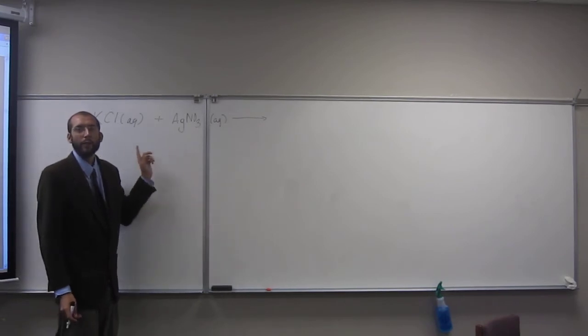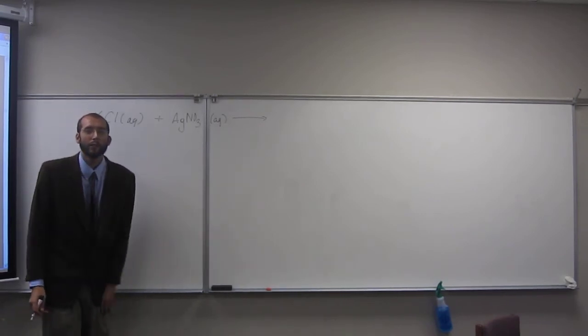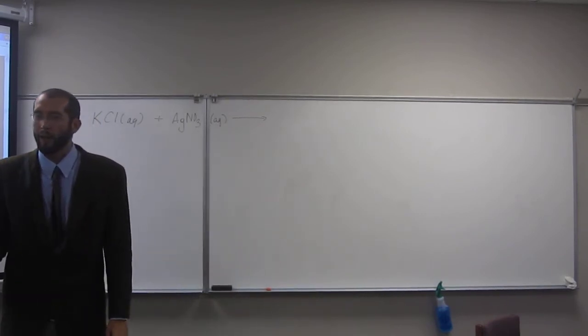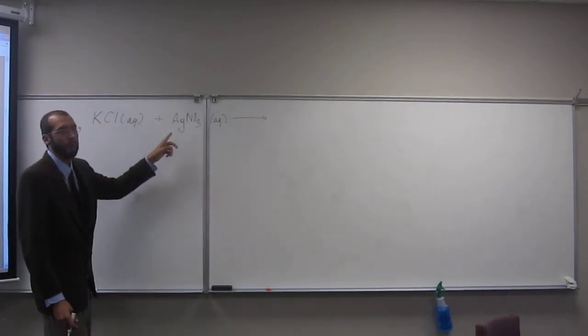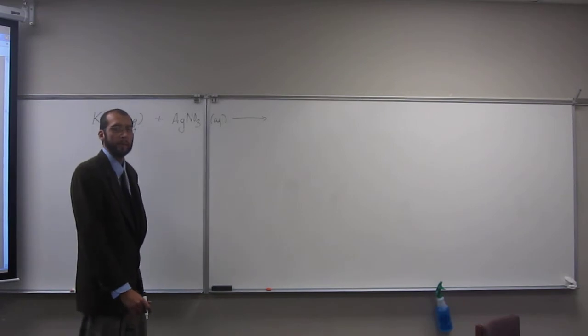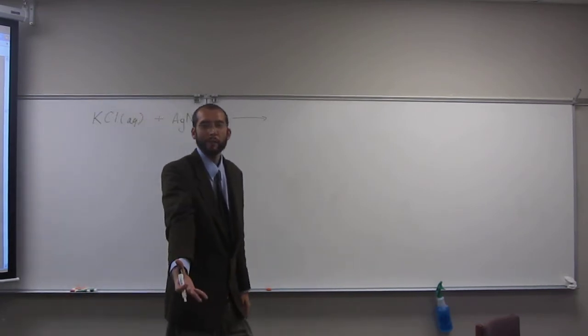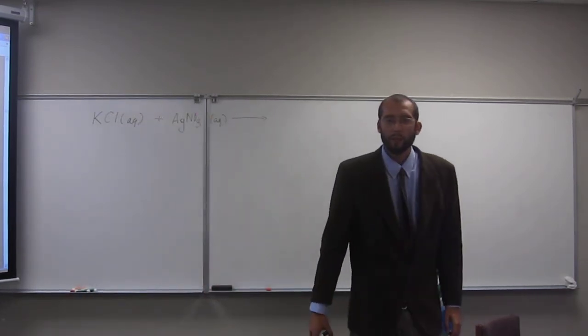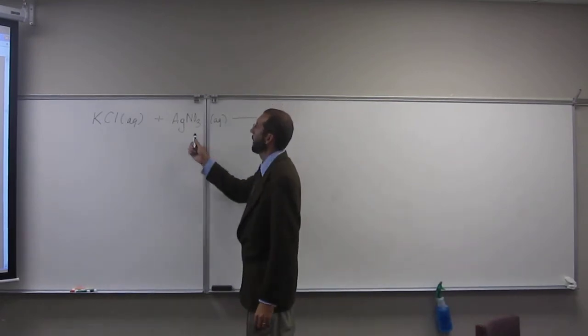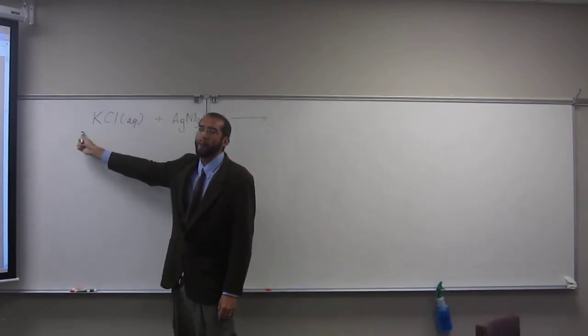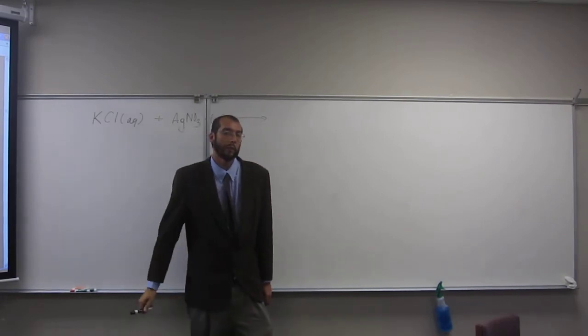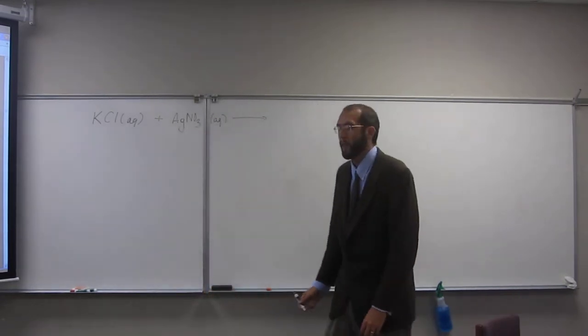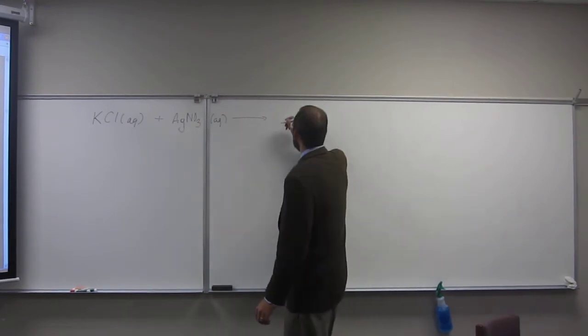Silver always precipitates with halogens, okay? So you're going to have this silver halide precipitating. In this case, it's going to be silver 1 chloride. How do we know that? There's that table that I told you that you need to know this. The other thing you know is that group 1s never precipitate. You also know that nitrates never precipitate. So it's pretty straightforward as to which one it's going to do.